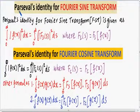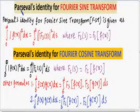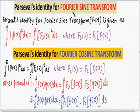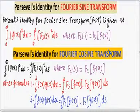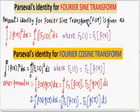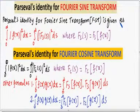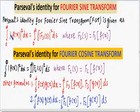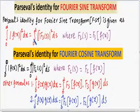In this video we shall discuss Parseval's identity for the Fourier Sine Transform and Parseval's identity for the Fourier Cosine Transform. The Parseval's identity for the Fourier Sine Transform (FST) is given by the integration from zero to infinity of the modulus of f(x) squared dx, equal to the integration from zero to infinity of the modulus of